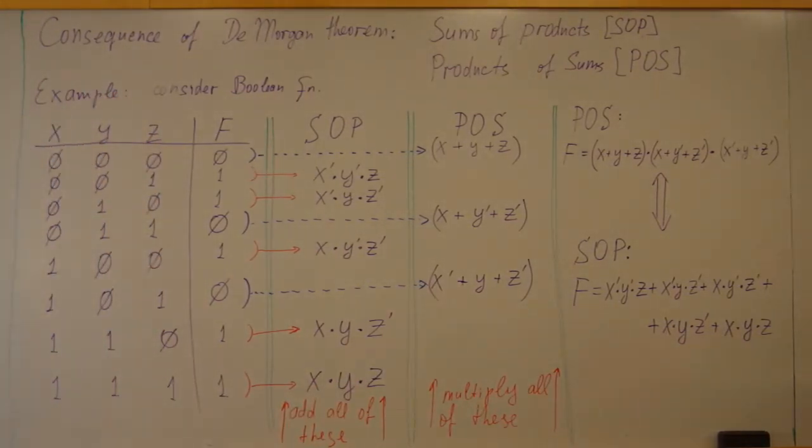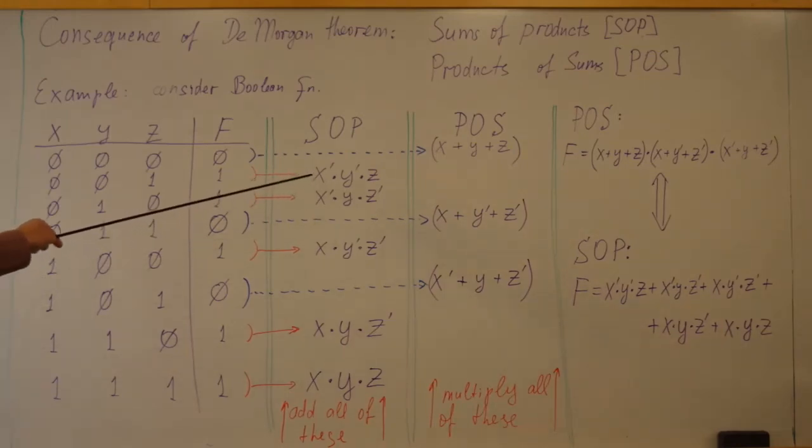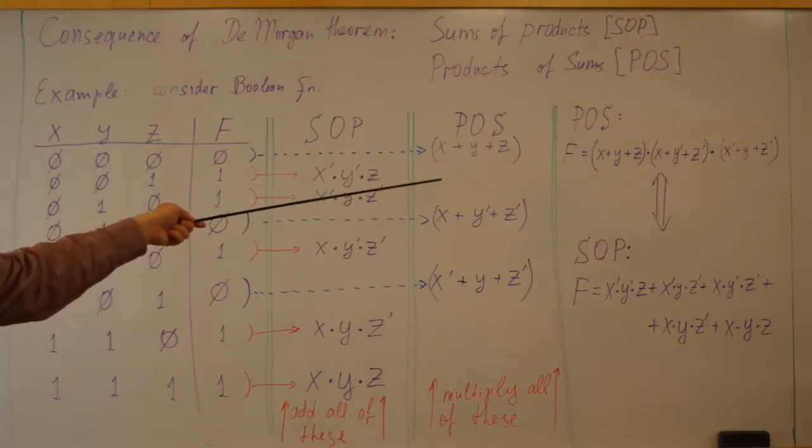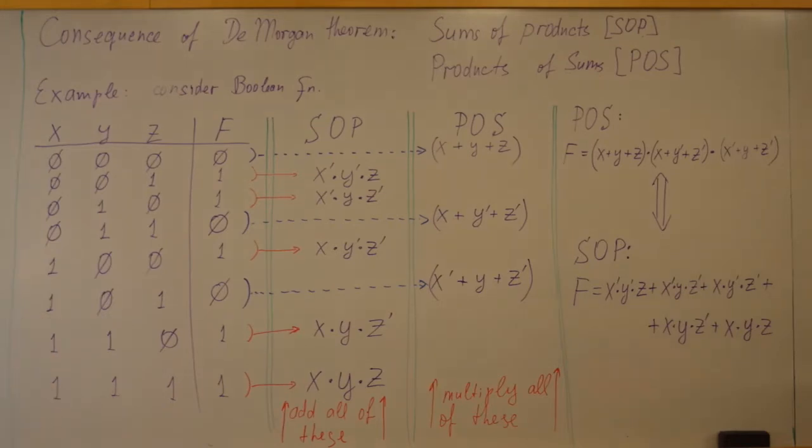Once again, if we want to present our function as a sum of products, we have to look for lines in table of truth where it results in ones. If we want to present our function as a product of sum, we have to look in the table of truth for lines that result in zero. And in the first case, we write these lines as products and sum them up. In the second case, we write these lines as sums and multiply them.